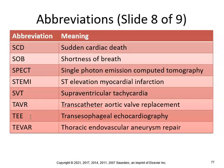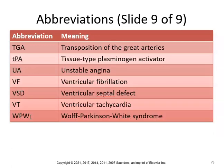TEE — transesophageal echocardiography. TEVAR — thoracic endovascular aneurysm repair. TGA — transposition of the great arteries. tPA — tissue plasminogen activator. UA — unstable angina. VF — ventricular fibrillation. VSD — ventricular septal defect. VT — ventricular tachycardia — all very serious conditions.